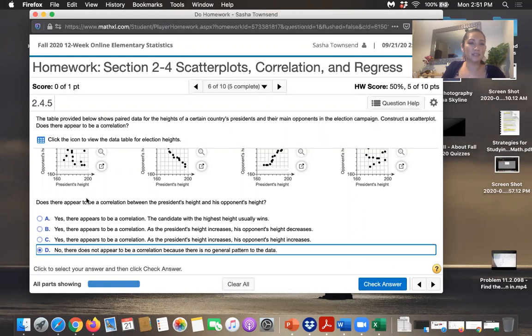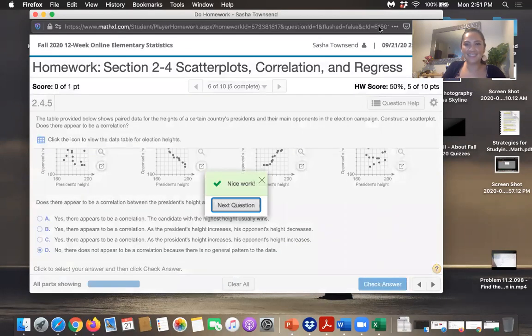And I was talking about a linear correlation, but there could be other types of correlations as well. But there doesn't appear to be any type of pattern there. So no, the answer is no. And that's it. So that's how you create a scatter plot in Excel and answer questions like this one.